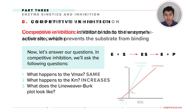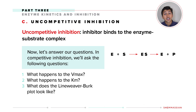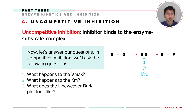Let's move on to uncompetitive inhibition. Be careful not to confuse uncompetitive inhibition with noncompetitive inhibition. Just like we did with competitive inhibition, we'll draw out our reaction scheme — except here the inhibitor binds only to the enzyme-substrate complex. Vmax is actually going to decrease here, because the amount of enzyme-substrate complex we form determines the amount of product we get.